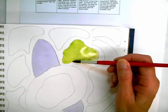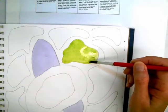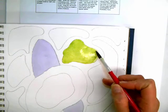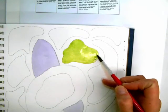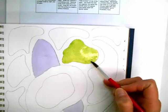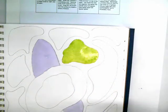Otherwise you get a bleeding effect which is a technique in and of itself called wet-on-wet. And we'll be using that technique in a moment. I will dry this and add another layer.